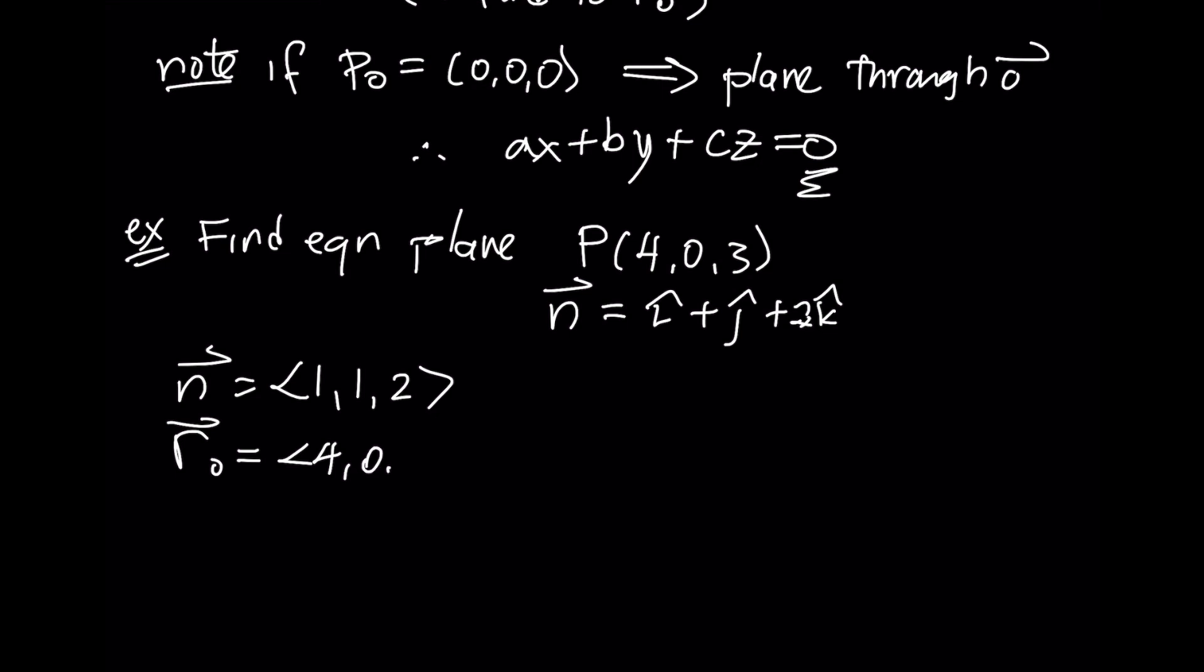An arbitrary point on the plane is just going to be represented by <X, Y, Z>. If we start here and we talk about R - R₀, we'll have <1, 1, 2> dotted with <X - 4, Y - 0, Z - (-3)>. And we want that to be 0.